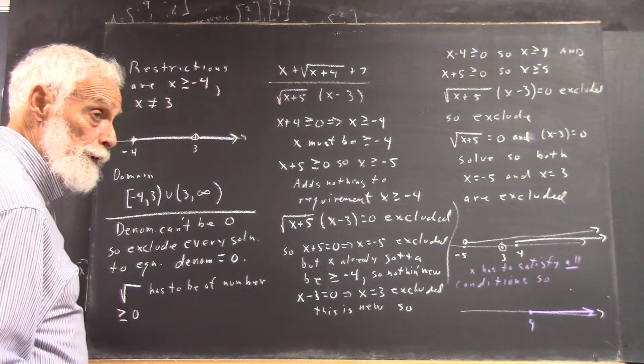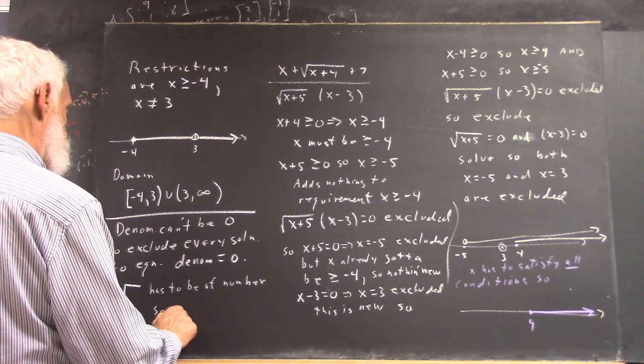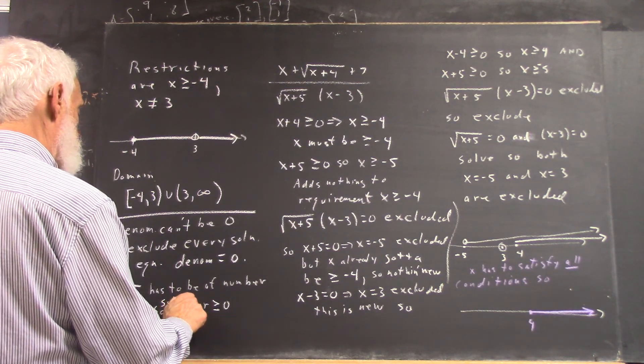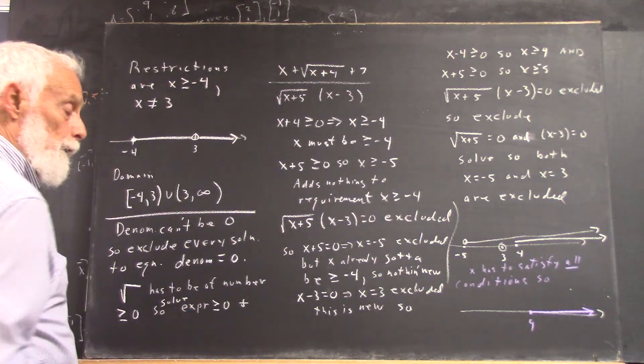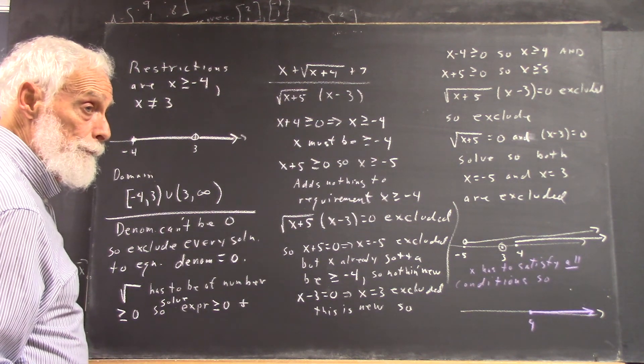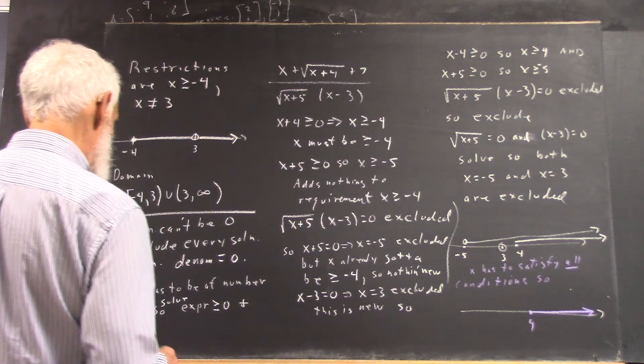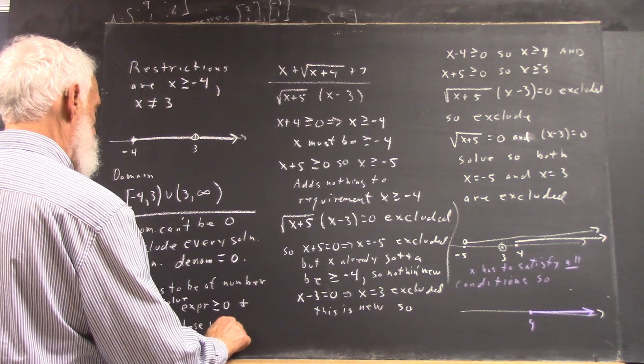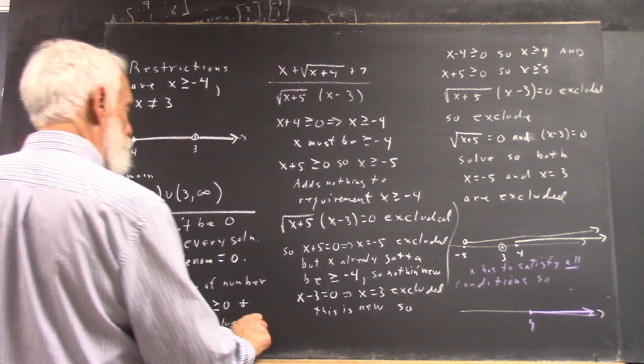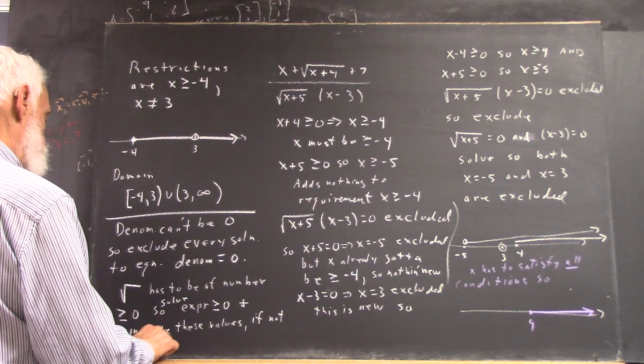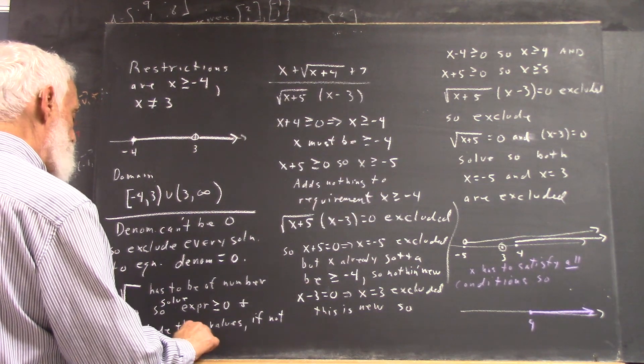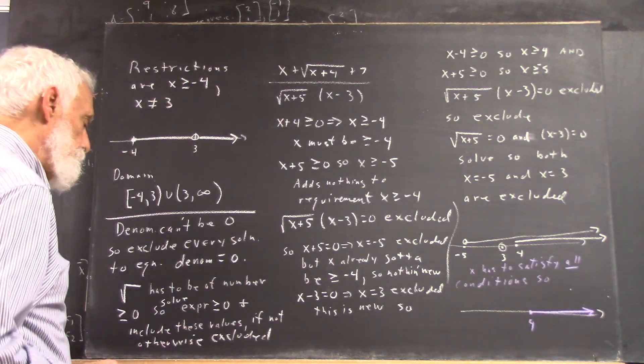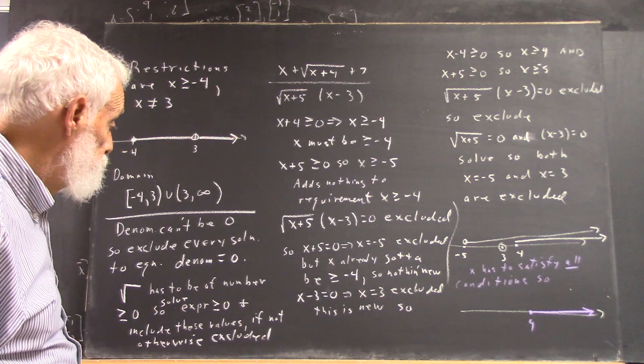Square root has to be a number greater than or equal to zero. So solve expression greater than or equal to zero, and include these values if they aren't otherwise excluded.